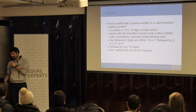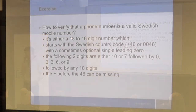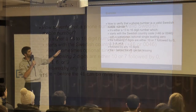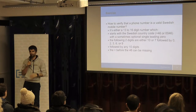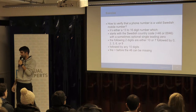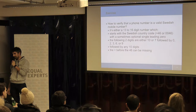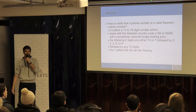Let's imagine that we have a requirement. We want to validate a Swedish phone number. It's 13 to 16 digits, it needs to start with the country code, and all this stuff. Then there's some rules that the Swedish government decided for mobile numbers. That's pretty much it — this is the requirement.